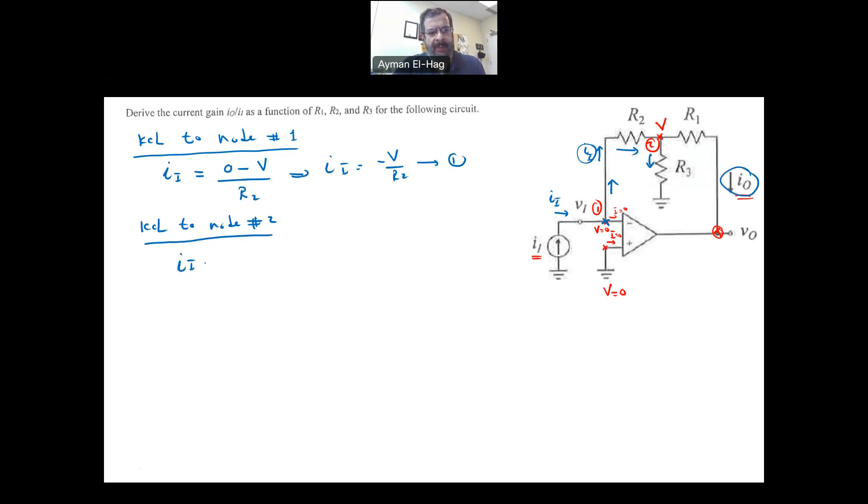So I_in equals these two currents that are leaving. The current that leaves downward is V divided by R3, and the current that goes to the other branch equals I_out. This is my second equation. In this equation I have I_out and I_in, which is what I want, but I don't want to have V here. I have to replace V with its value.